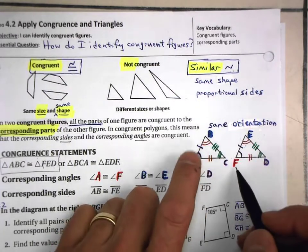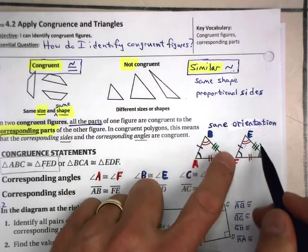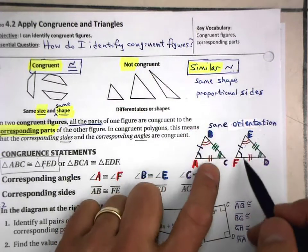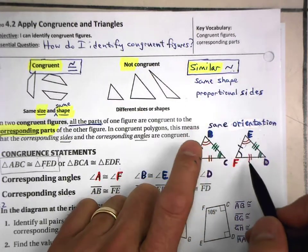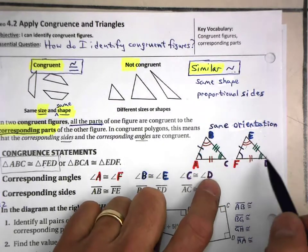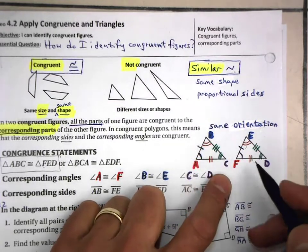Actually, 12, right? 1, 2, 3, 4, 5, 6, 7, 8, 9, 10, 11, 12. 12 different separate things that we have to measure and then compare with each other in order to confirm that these two triangles are congruent.